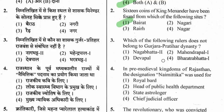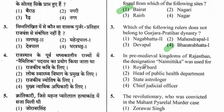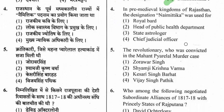Question 4: In pre-medieval kingdoms of Rajasthan, the designation 'Naimittik' was used for Royal Bird, Head of Public Health Department, State Astrologer, or Chief Judicial Officer? The right option is State Astrologer.